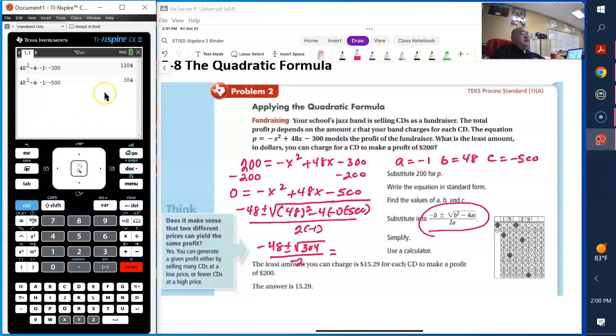So I'm going to go ahead and add. Well, I have 304, so I'm going to get the square root of 304. Well, the two situations is going to be negative 48 plus the square root of 304 divided by negative 2. Or I can have x equals negative 48 minus the square root of 304 divided by negative 2. So I'm going to do the first situation. I have negative 48 plus the square root of 304 divided by negative 2. And that's 15.28.